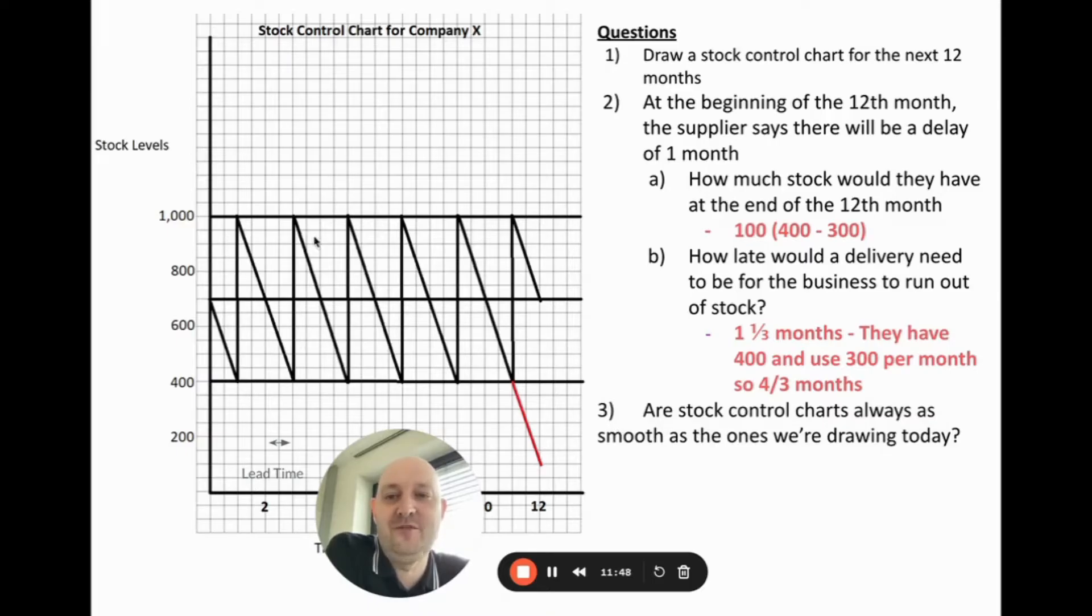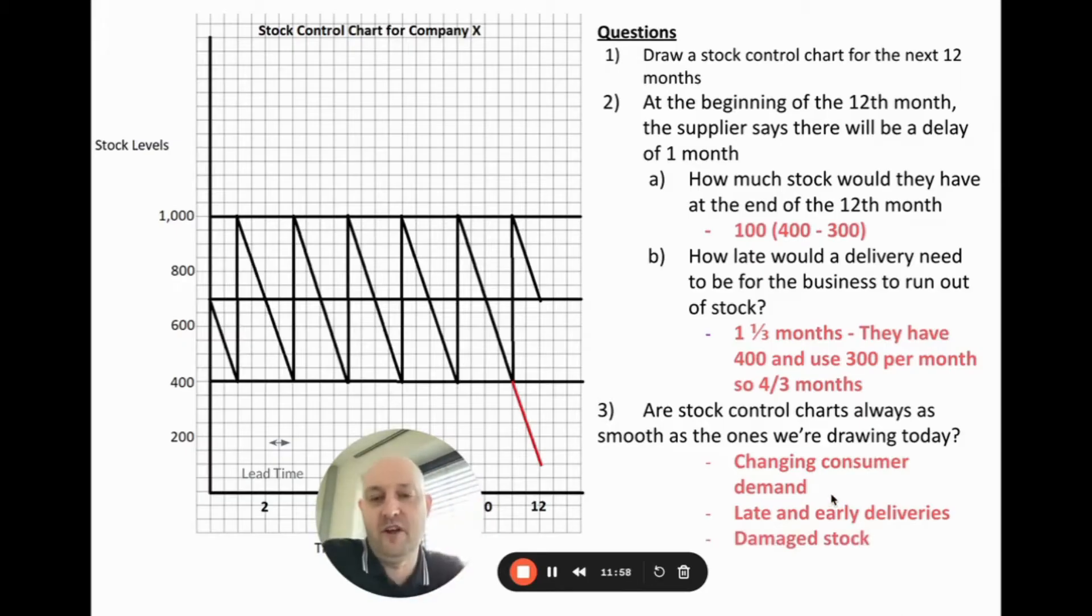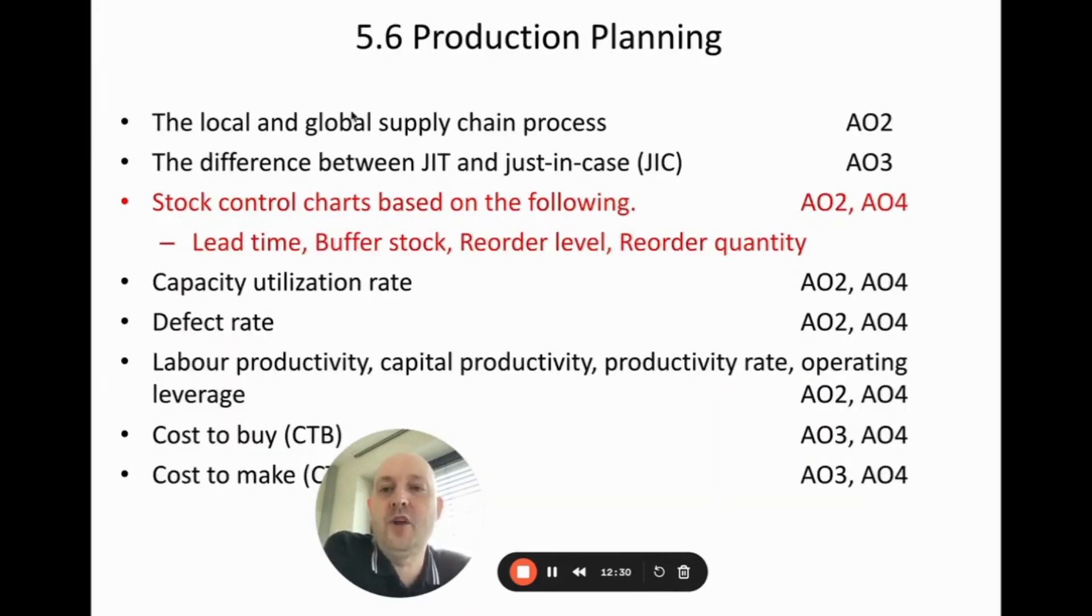Are stock control charts always as smooth as the one we've just drawn? When we've drawn these they're lovely and smooth and it always goes down to the minimum or maximum. Well, in reality they don't look as smooth as this because consumer demand is not linear - it goes up and down and fluctuates. We get late and early deliveries. Maybe the supplier delivers it early or late, and sometimes stock might be damaged and we don't get the full amount. But in this situation, the stock control charts are plans for the future. So if the stock control chart has problems like we're going to run out of stock, then we would do it again. Maybe we order more stock. The idea of stock control charts is they're a plan for the future. Things go wrong, but then we try and mitigate against those circumstances.